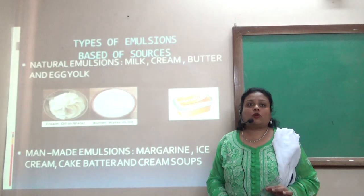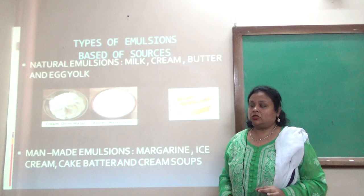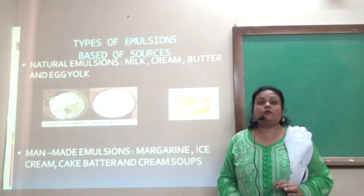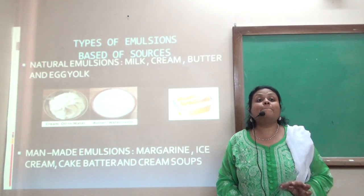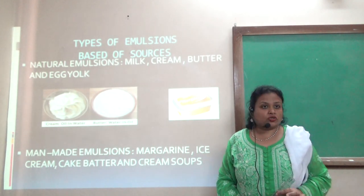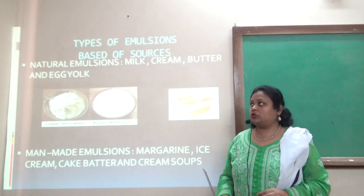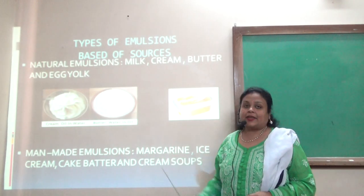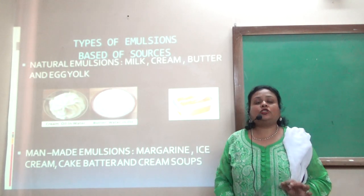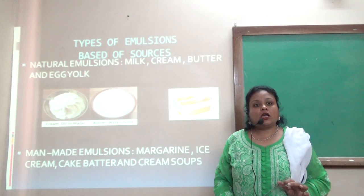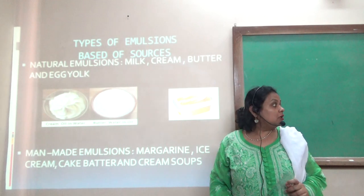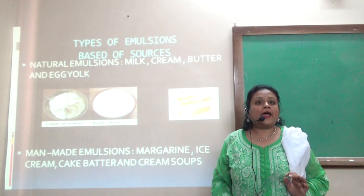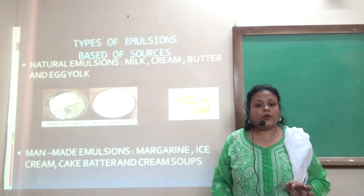Now, types of emulsions — usually we classify them based on their sources. There are two kinds: natural and man-made emulsions. Natural emulsions include milk, cream, butter, and egg yolk.